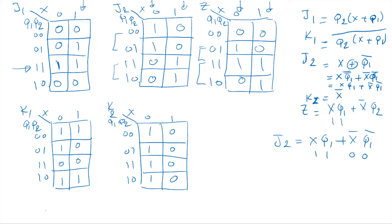Now we have all expressions in K-map form, showing present state combinations and external input. Knowing the J and K values for each situation allows us to determine the next state. We will concatenate J1K1 into one map and J2K2 into another, with Z remaining separate, and use those to create our next state table.